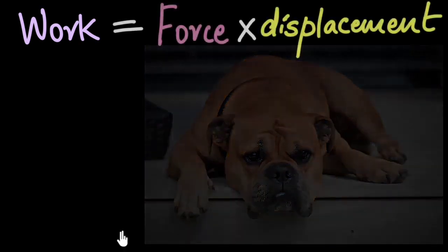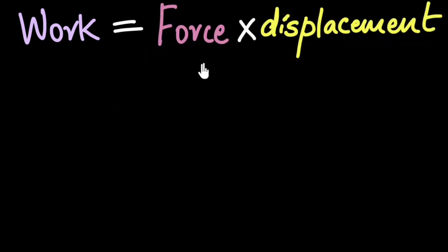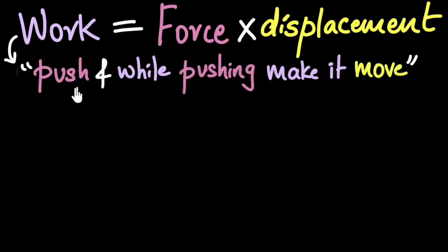Now in a previous video, we saw how to calculate work. It's calculated as force acting on an object, multiplied by the displacement of that object. This means that to do work in physics, you need to push or pull on something, and while pushing or pulling, you have to make it move. This is how we do work in physics.